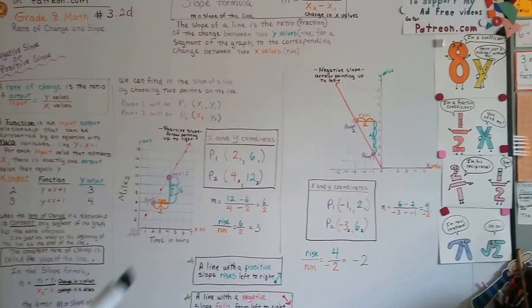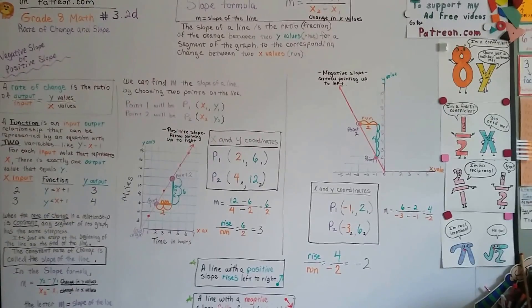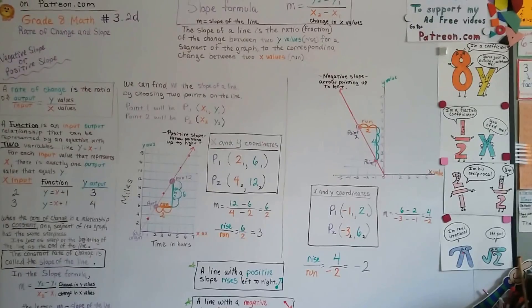This is a positive. It's going up to the right. This is a negative. It's going up to the left. Isn't that something? All right.